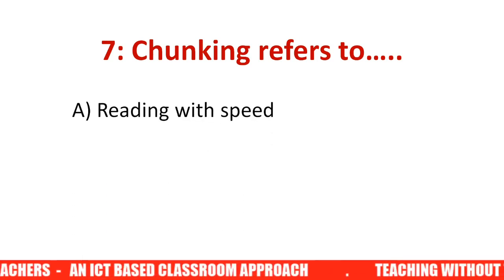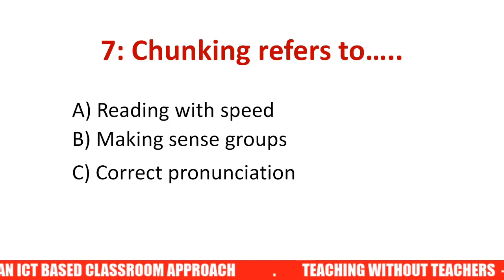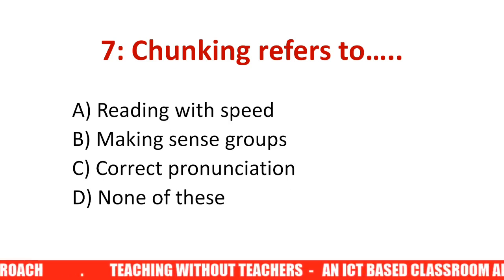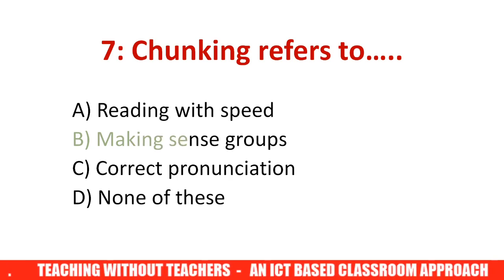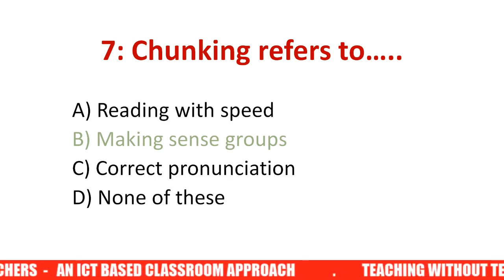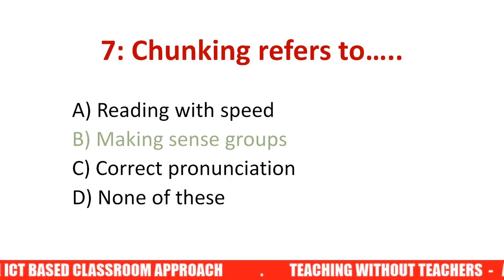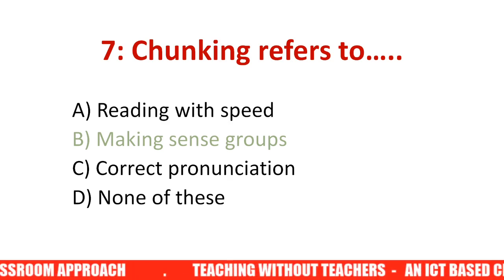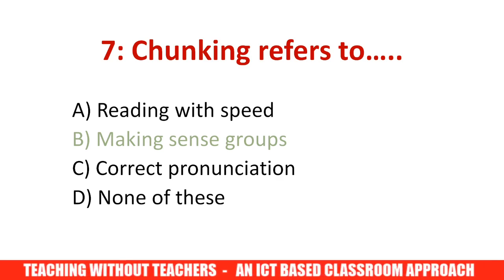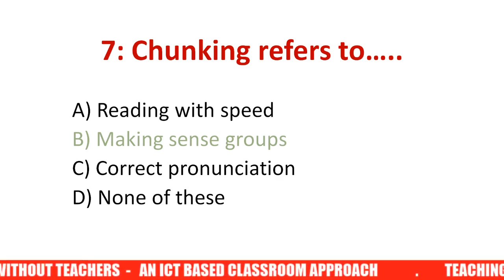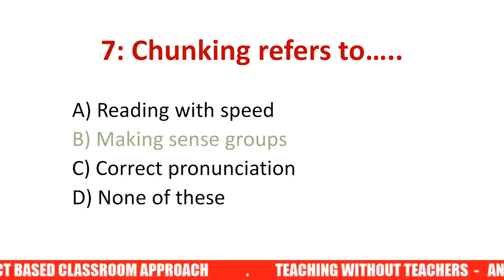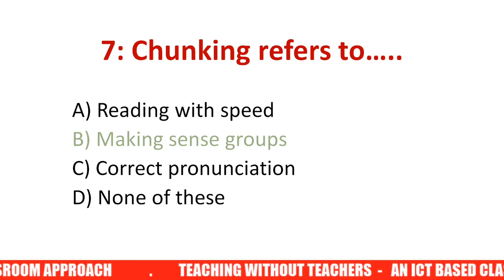Question number seven: Chunking refers to dash. Options are: reading with speed, making sense groups, correct pronunciation, none of these. The answer is making sense groups. Chunking means when you are reading a story, you divide it into different sense groups — part by part, sub-part by sub-part. This helps you read and understand the text step by step. We call these divisions sense group paragraphs.